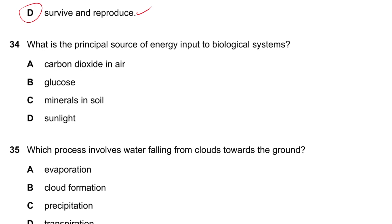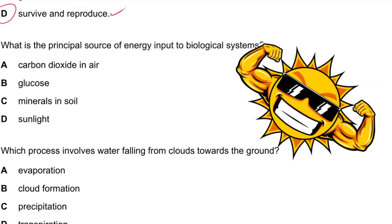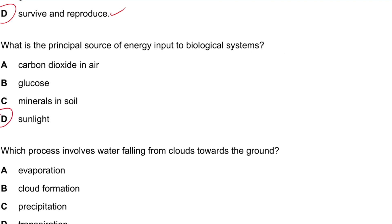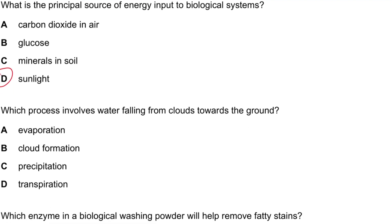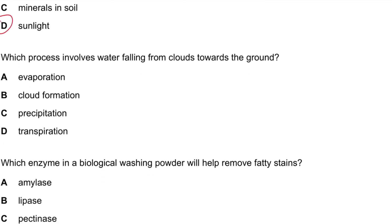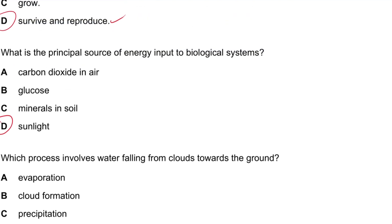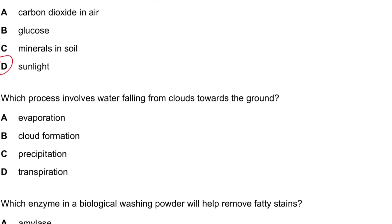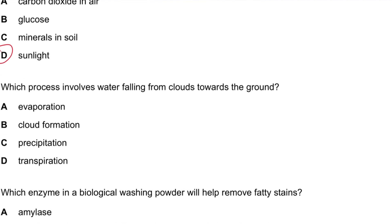Question 34: What is the principal source of energy input into ecosystems? The answer is sunlight — the sun. Plants are the first organisms, and they get their energy from the sun, making it the primary energy source.